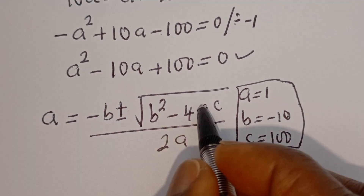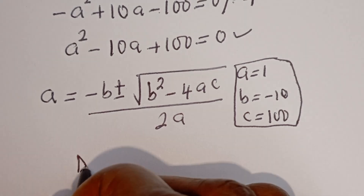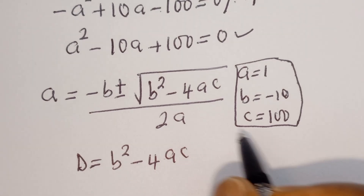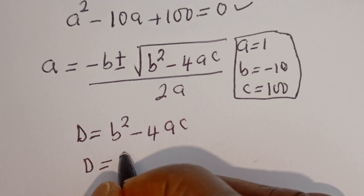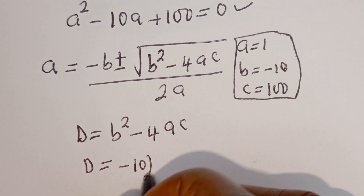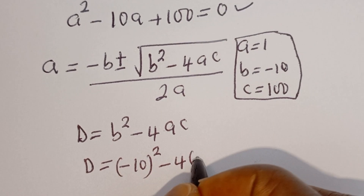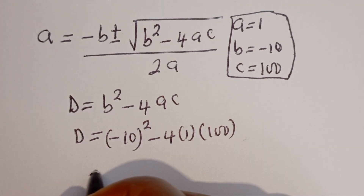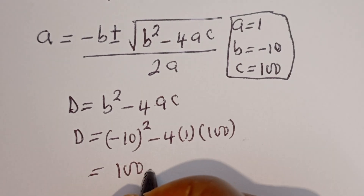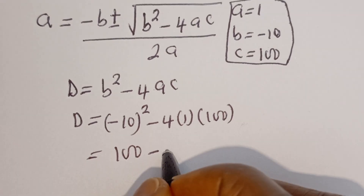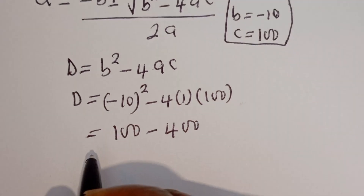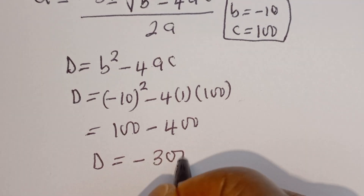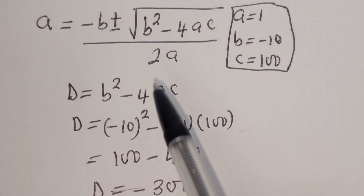Now let's consider the discriminant first. D is equal to B squared minus 4AC. Then D is equal to minus 10 squared, minus 4 multiplied by 1, multiplied by 100. Here, minus 10 squared is 100, minus 4 times 1 times 100 is 400. Then D is equal to 100 minus 400, which is minus 300.